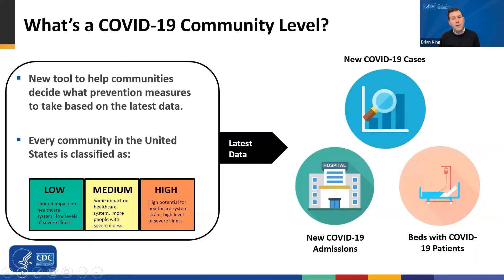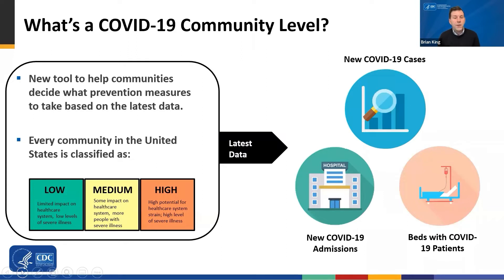The data on new cases act as an early warning sign for potential increases in health system strain, in the event of another COVID-19 surge that could happen due to potentially another variant that could emerge.